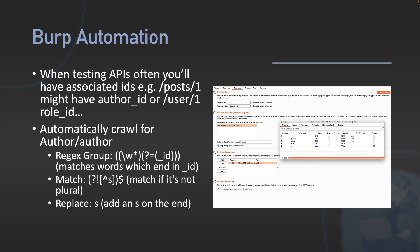For Burp automation, I include some automation I do in Burp. When you test APIs, you'll often have a resource and in the JSON you'll have associated resources — if you have an API endpoint for posts, you'll often see user ID or forum ID, or maybe author ID, role ID, or other types of IDs. So I've created a simple regex script that works in Intruder, which crawls through the API looking for these associated records. If it sees role ID, it's going to look for both slash role and slash roles. I'll put this in the description so you can easily copy and paste it.